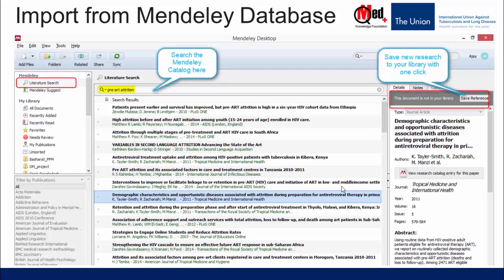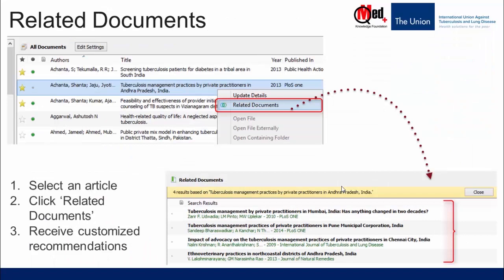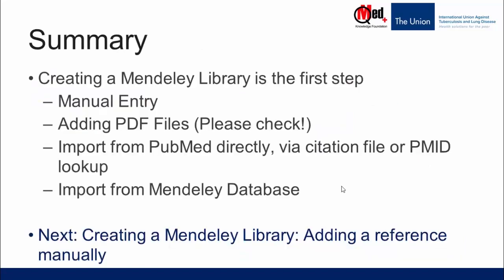Please note there may be errors, so always check and correct the bibliographic details manually before you start citing them. This is another interesting way of finding articles related to your topic of interest — but remember you are searching the Mendeley database, so the same limitations apply. To summarize, in this video we learned about the different ways of adding references to the Mendeley Library. In the next video, we will demonstrate how to add a reference manually.